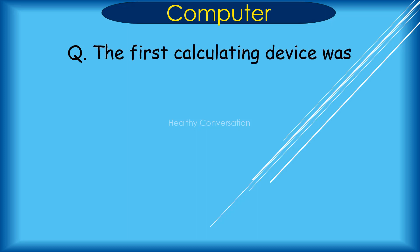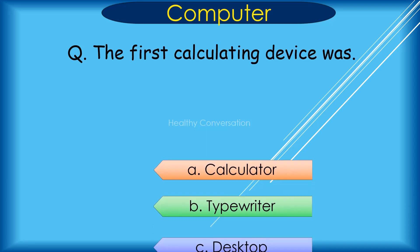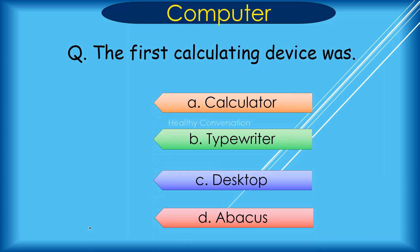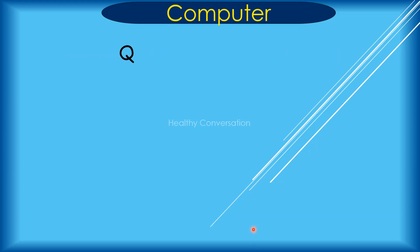Question: The first calculating device was A. Calculator, B. Typewriter, C. Desktop, D. Abacus. Correct answer is D. Abacus.